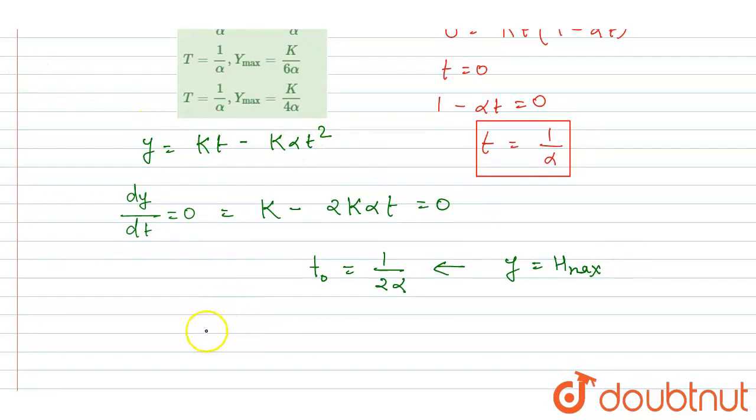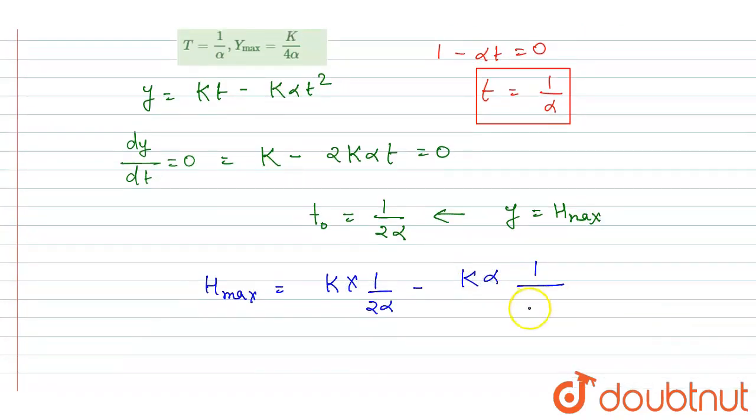If I put the value of time, I will write h_max = k × t₀, where t₀ is 1/(2α) - kα(1/(4α²)). This will get cancelled out and 1/(2α)